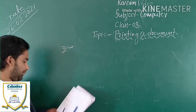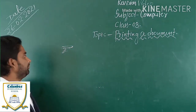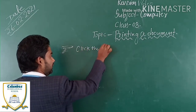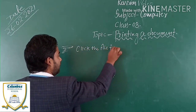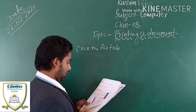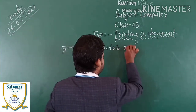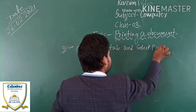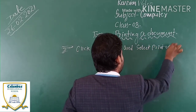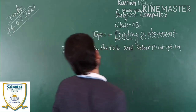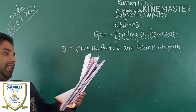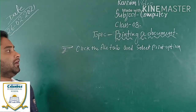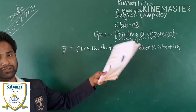The first step is to click the File tab and select the Print option. When you do this step, three options will appear.